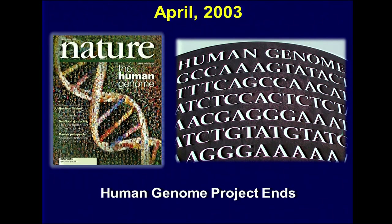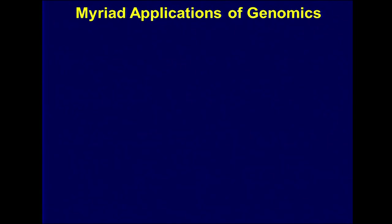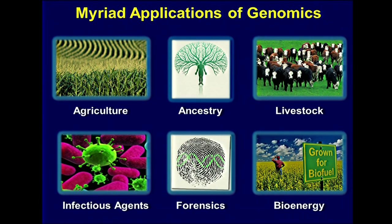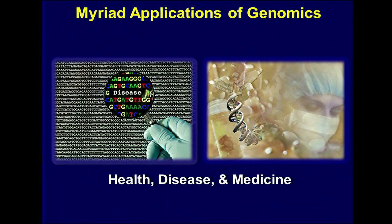There has been incredible growth since the end of the Human Genome Project in the field of genomics. Many areas have been greatly advanced by the tools, technologies, and information associated with genomics. But what I'm going to focus on, not surprisingly being at the National Institutes of Health, is the application of genomics to health, disease, and medicine. As soon as the Human Genome Project ended, there was significant interest in using this foundational information about the human genome to improve the practice of medicine.